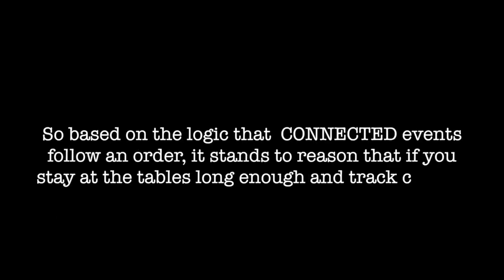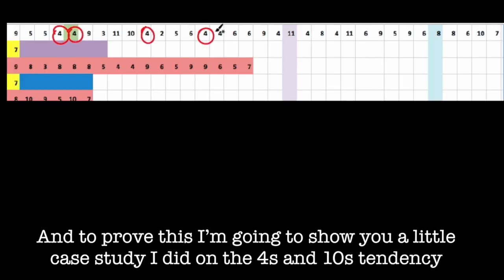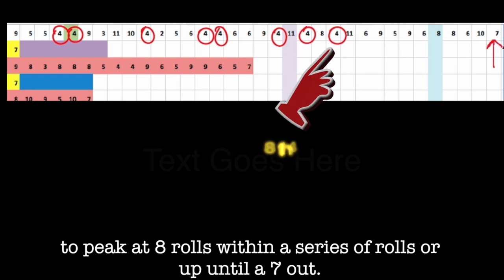So based on the logic that connected events follow an order, it stands to reason that if you stay at the tables long enough and track certain patterns, you can make certain predictions based on that pattern's output so far. And to prove this, I'm going to show you a little case study I did on the fours and tens tendency to peak at eight rolls within a series of rolls or up until the seven out.